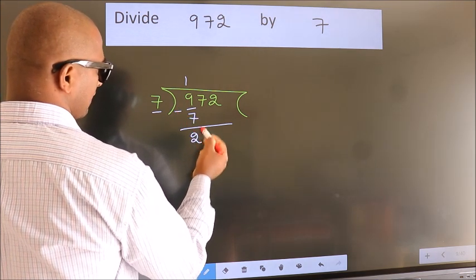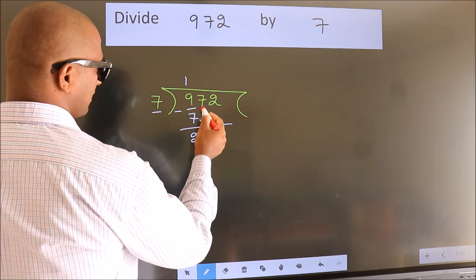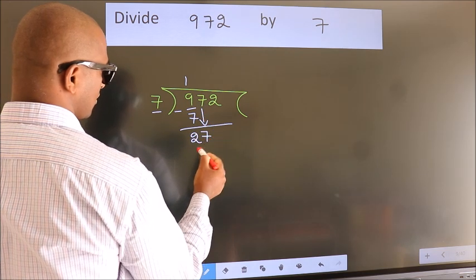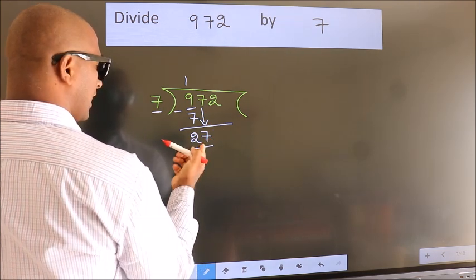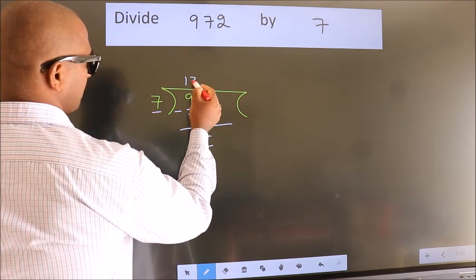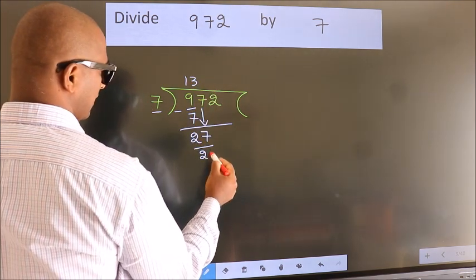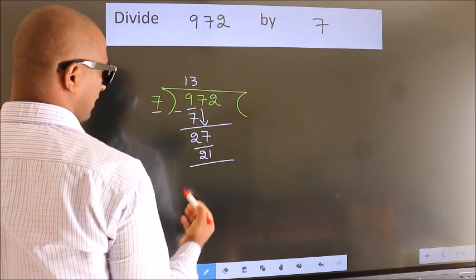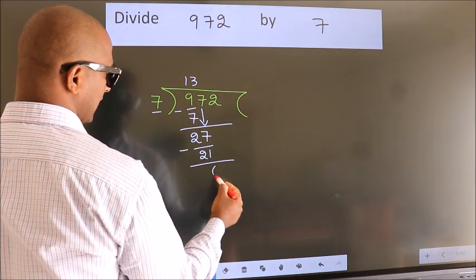After this bring down the beside number. So 7 down. So 27. A number close to 27 in 7 table is 7 threes 21. Now we subtract. We get 6.